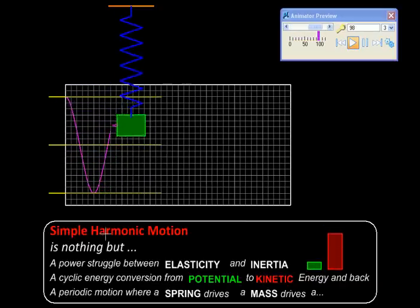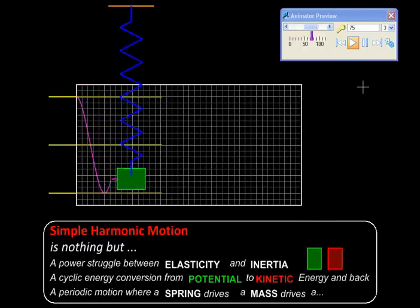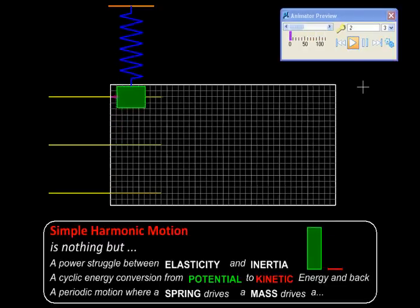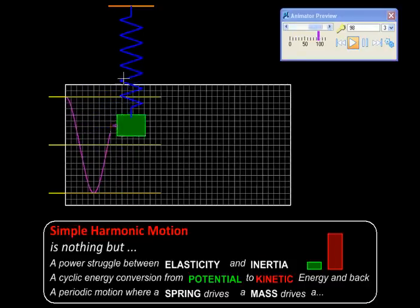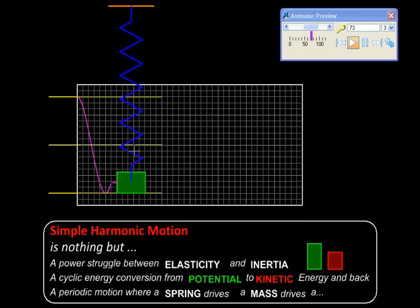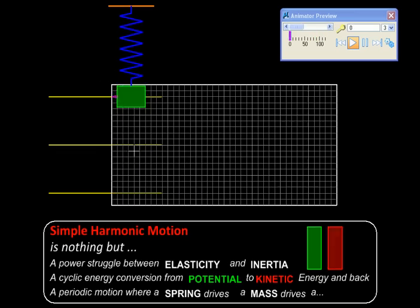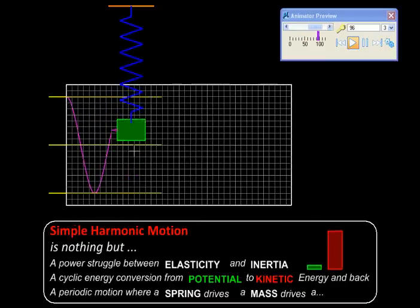So at the heart of simple harmonic motion is a power struggle between the spring (or elasticity) and the mass (or inertia). They keep gaining control one after the other cyclically and drive the system.